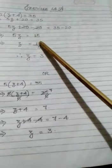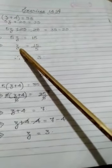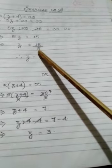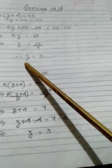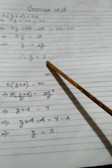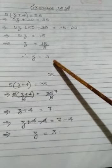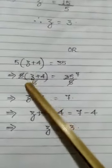So z is equal to 15 by 5. Therefore we reach at the answer z is equal to 3, and hence the value of z is arrived at as 3.